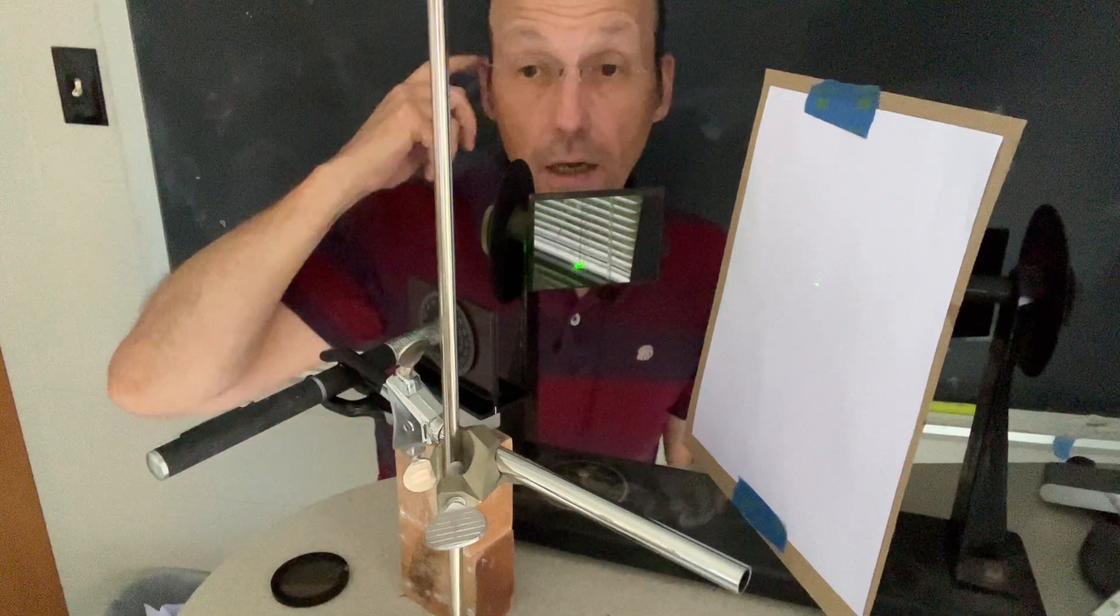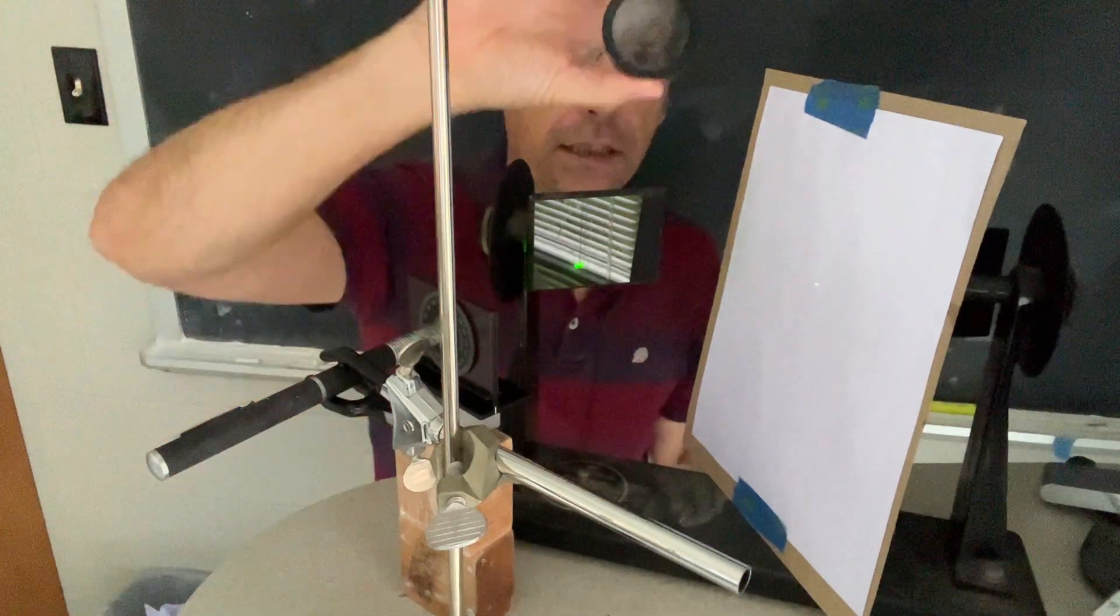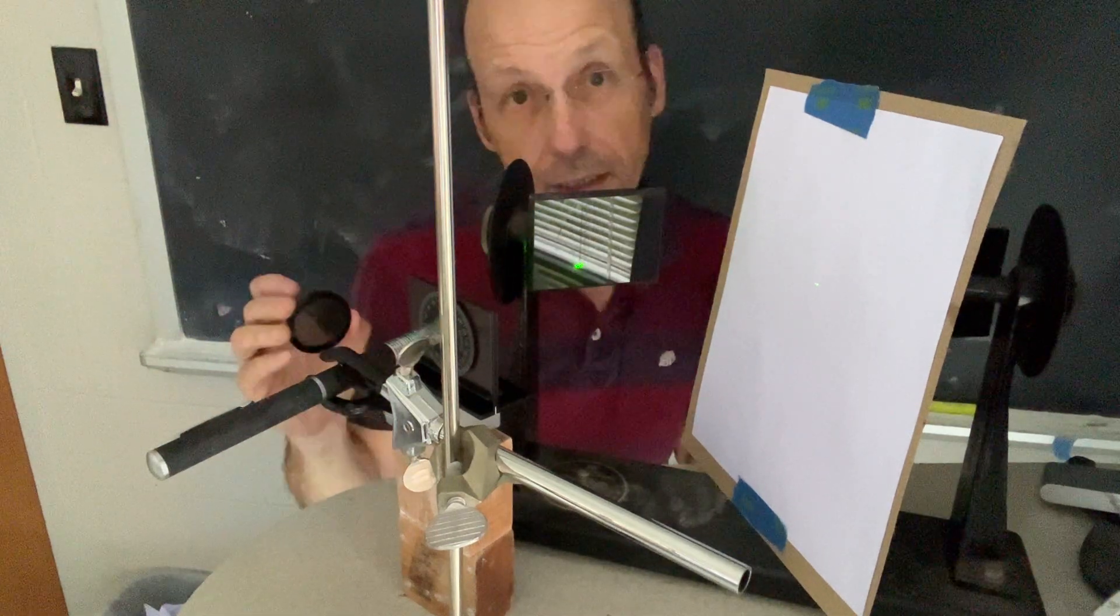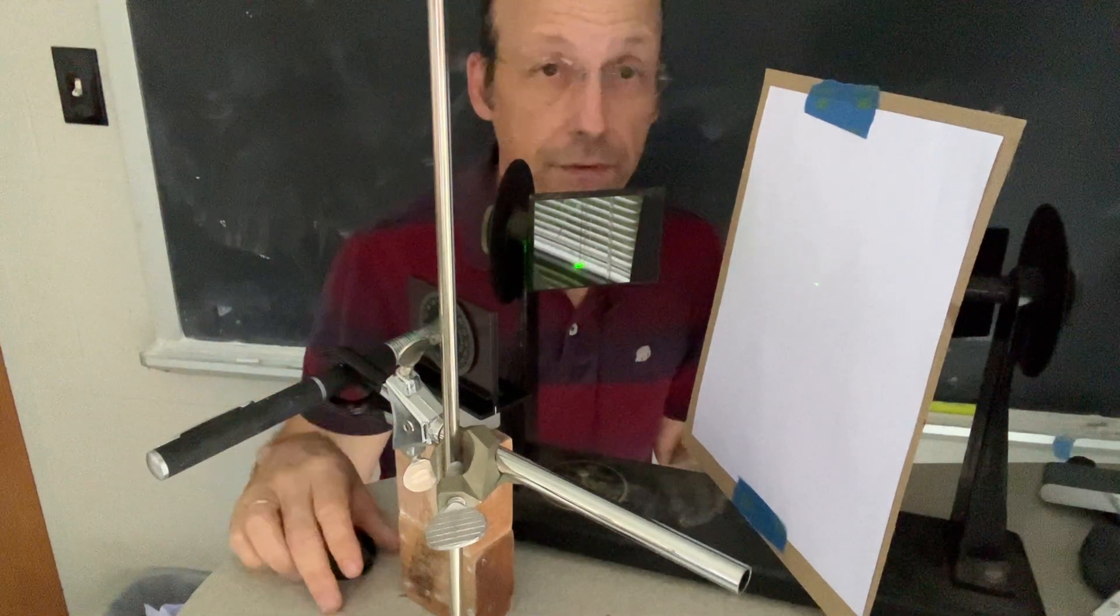And this is why we have polarized sunglasses. They're set up to block reflected light off of horizontal surfaces.